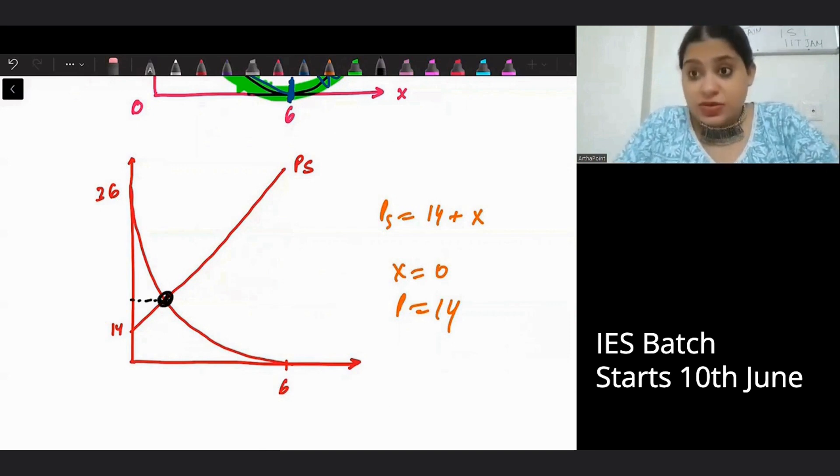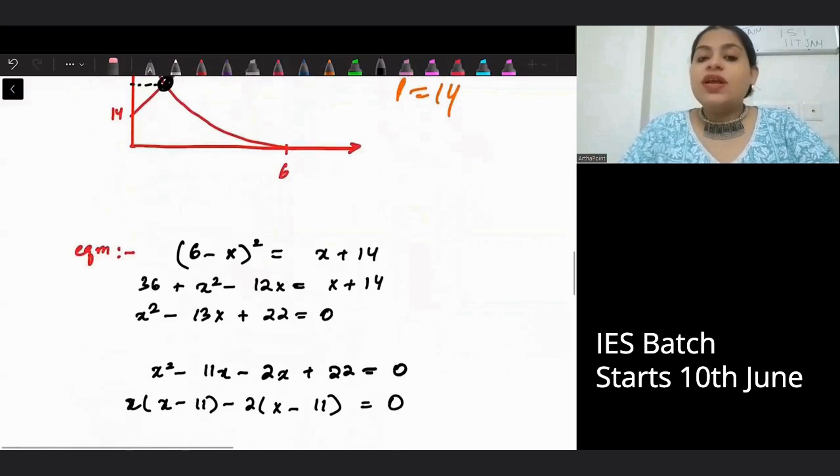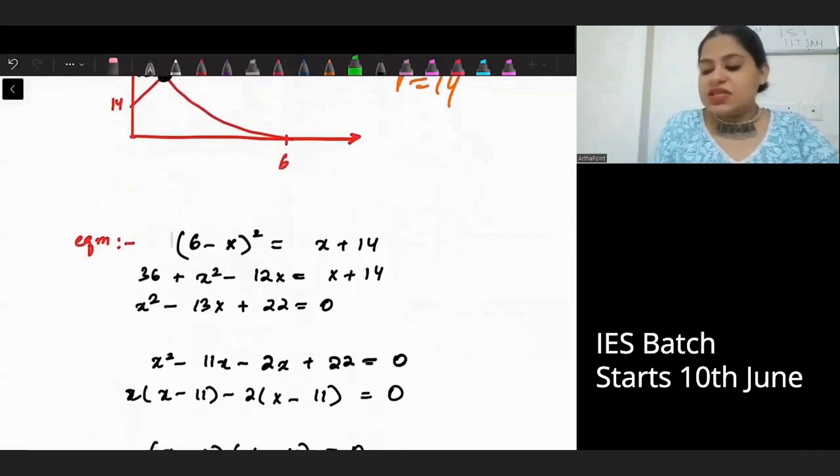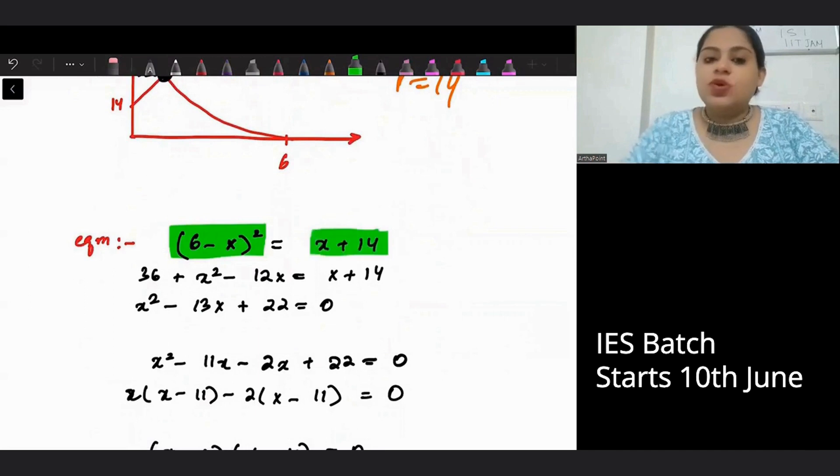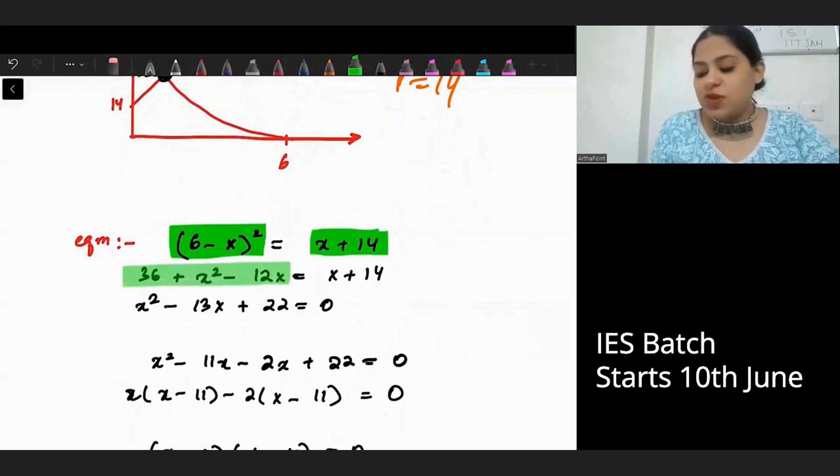Now, we know that equilibrium can be found out by equating the two. I need the equilibrium price. So when I go ahead and I equate the two, I say 6 minus x whole square is equal to x plus 14. You equate demand to supply.